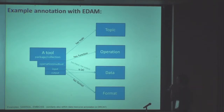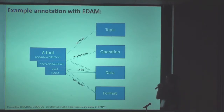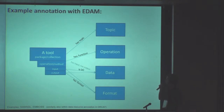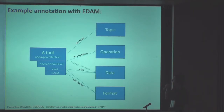This is how an example annotation with EDAM may look, in the case of annotating a tool or a package. A tool or a collection of tools may have a topic, such as systems biology. The tool or its operations may have a function, for which you can use a term or concept from EDAM's operations sub-ontology. And then they have inputs and outputs, which are some types of data, and those inputs and outputs have a format, which is also modeled in EDAM.